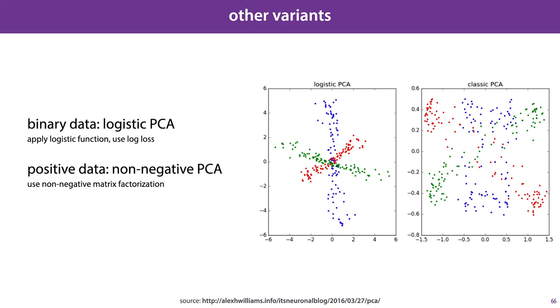If our data has only binary values, like true or false, then we can reduce it with the same trick we saw before. Apply a sigmoid and fit the log loss. As you can see on the right, this often gives us much better separation in the reduced dimensionality.